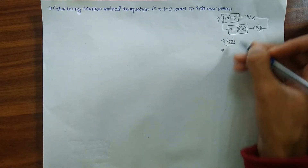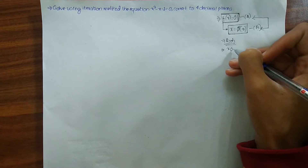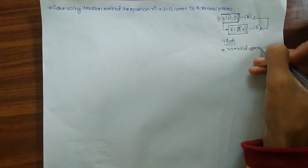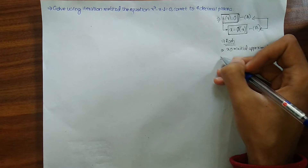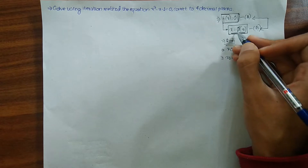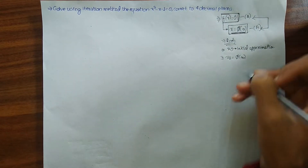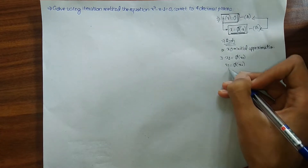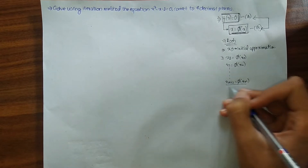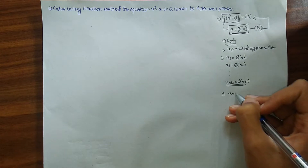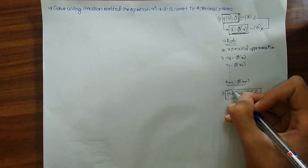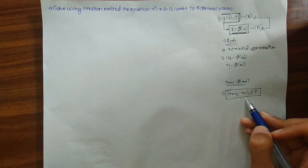Now, if x₀ is our initial approximation, then we find the first approximation x₁ by substituting x₀ into equation (b): x₁ = φ(x₀). Similarly, x₂ = φ(x₁), and we continue such that x_{n+1} = φ(xₙ). We keep iterating until |x_{n+1} - xₙ| ≤ our error tolerance e.